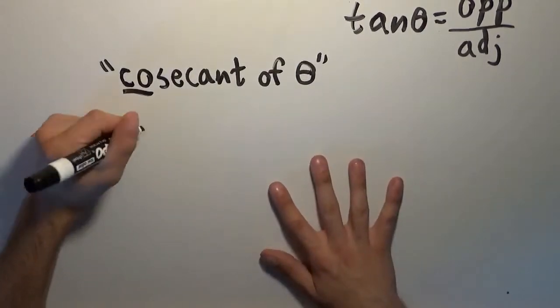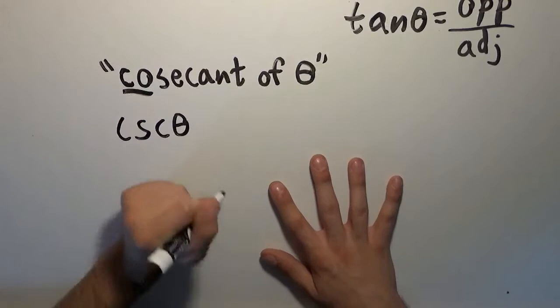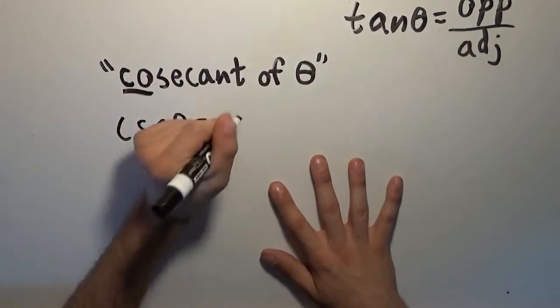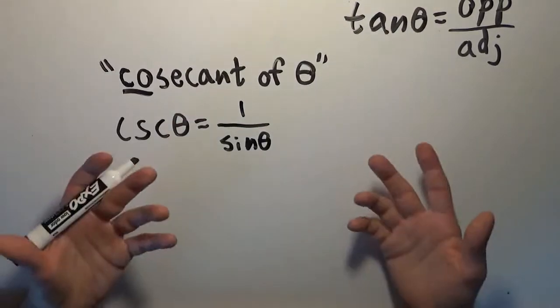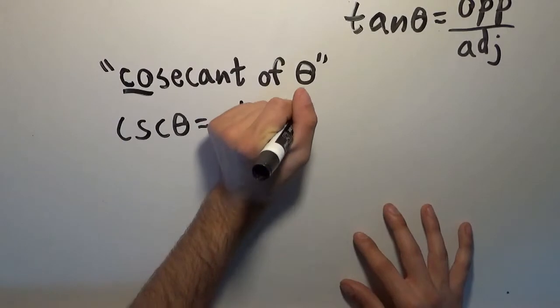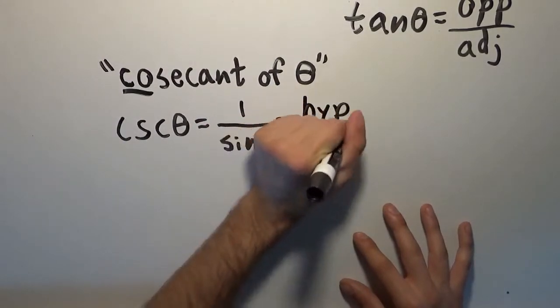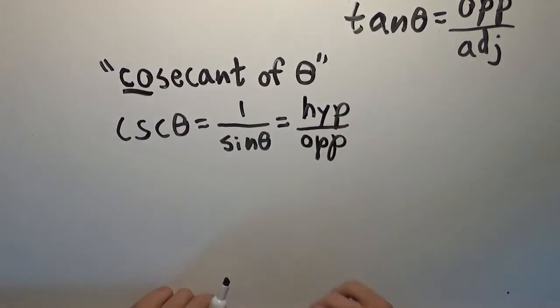So the cosecant of theta, abbreviated csc of theta, is equal to 1 divided by the sine of theta. Because sine of theta is opposite over hypotenuse, 1 over the sine is hypotenuse over opposite. There you go, over opposite.